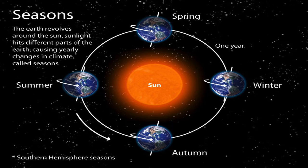In between these two seasons, both hemispheres also experience autumn and spring, when it is neither very hot nor very cold. The region near the equator receives almost the same amount of sunlight throughout the year, always remains hot, and has days and nights of equal duration — same, jaise 12 hours each. On the other hand, the poles receive sunlight only for 6 months and remain dark for the next 6 months.